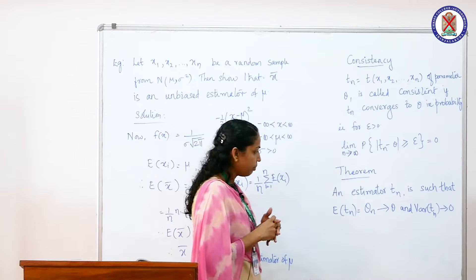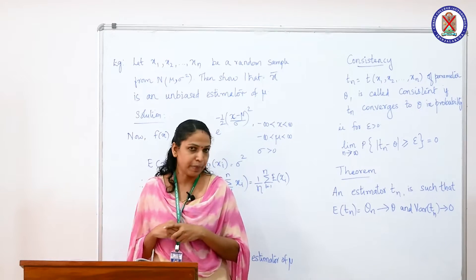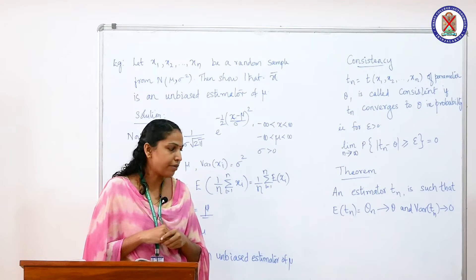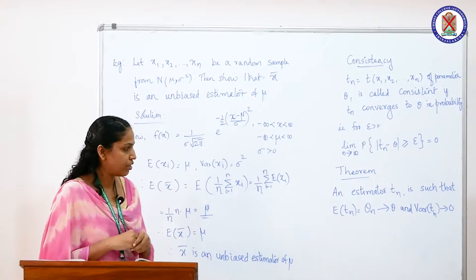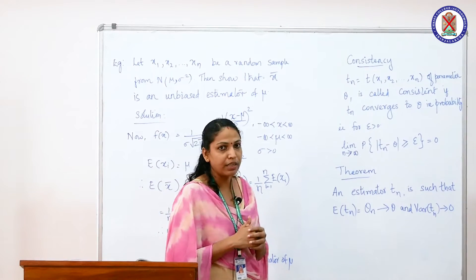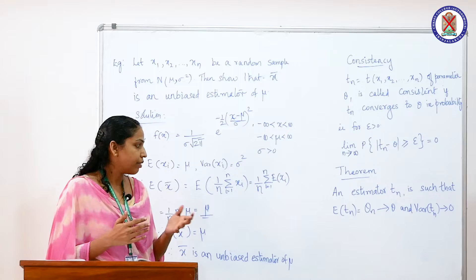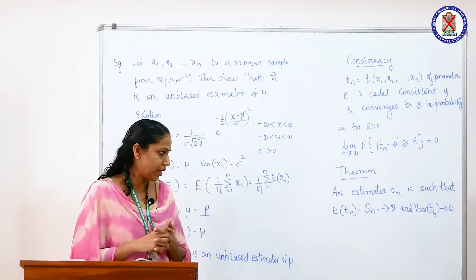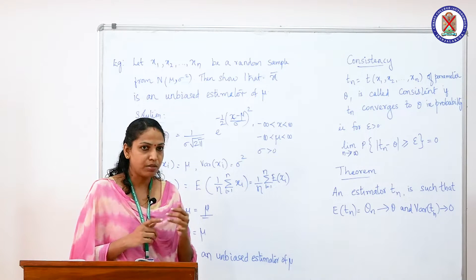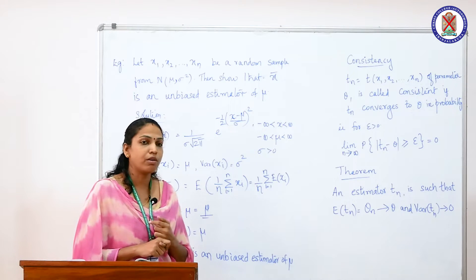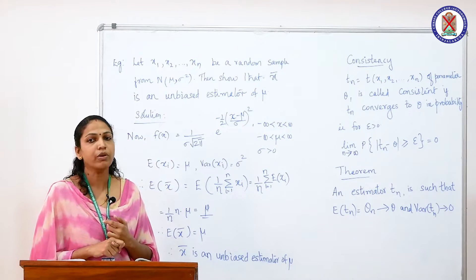There is an important theorem: an estimator Tn such that expectation of Tn equals theta and variance of Tn converges to 0 as n tends to infinity is a sufficient condition for finding a consistent estimator. If we are asked to find a consistent estimator, we can use these two conditions — we have to find the mean of the estimator and also show that the variance of the estimator tends to 0 as n tends to infinity.